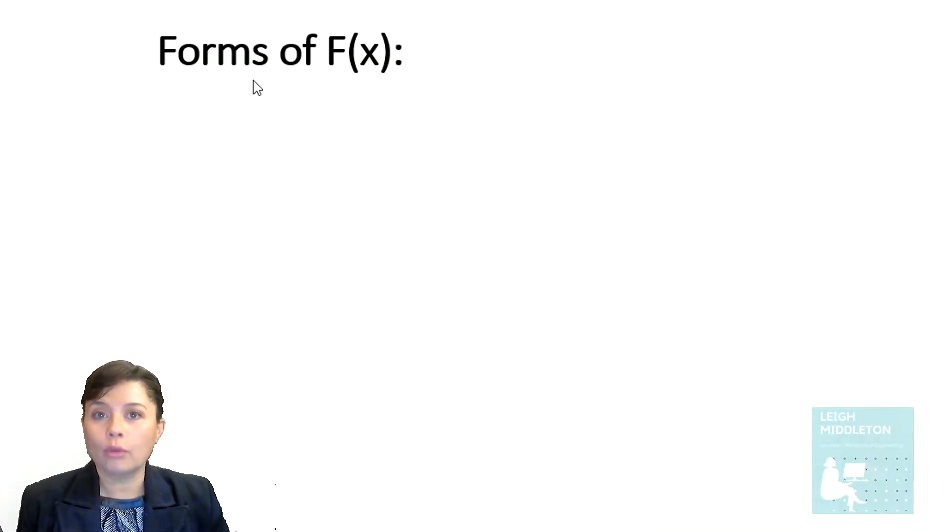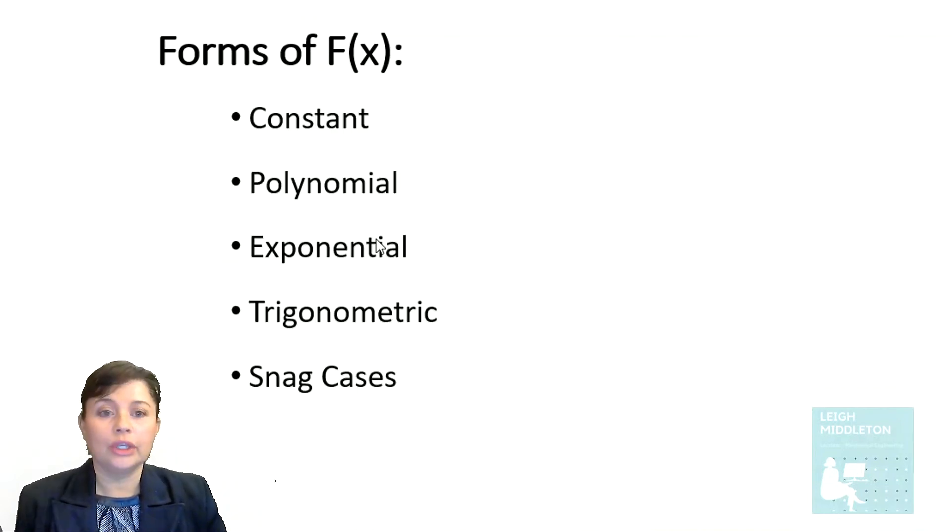There are different forms of this F(x). We are going to be looking at where F(x) is a constant, where it is a polynomial, so you will have the independent variable in that F(x). Remember, the x just stands for some independent variable, where F(x) is exponential, trigonometric, and for each of these, you also get what we call snag cases. And we'll have a look at examples of those also.